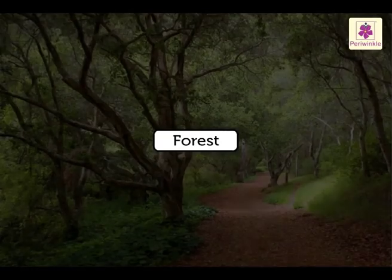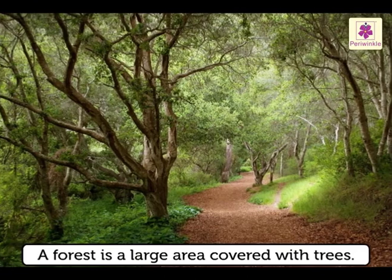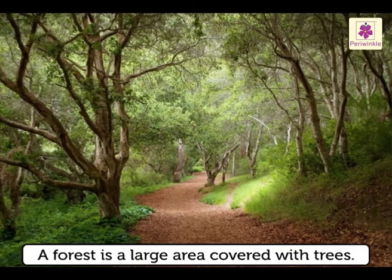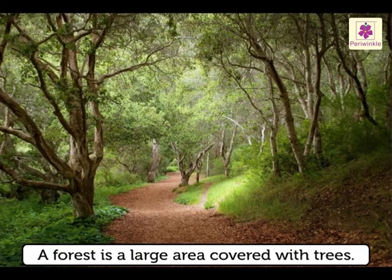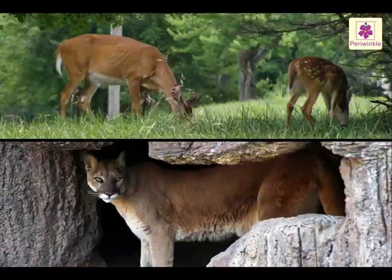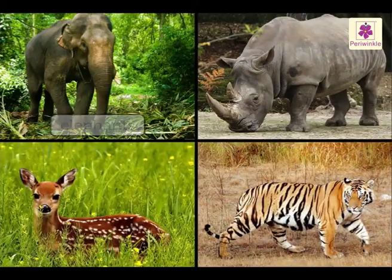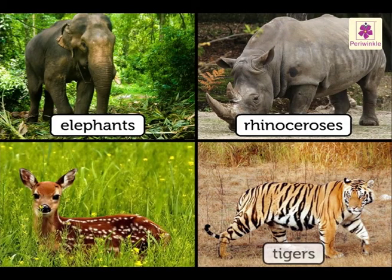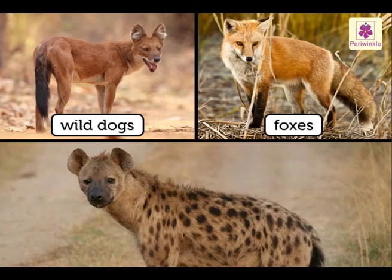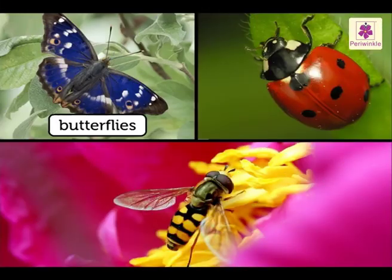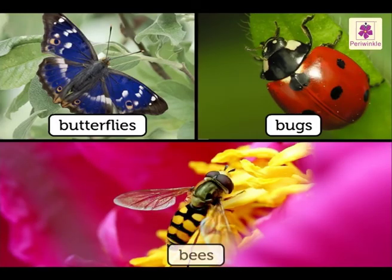A forest is a large area covered with trees. It provides food and shelter to both large and small animals, from elephants, rhinoceroses, tigers, deer, wild dogs, foxes, and hyenas, to butterflies, bugs, and bees.